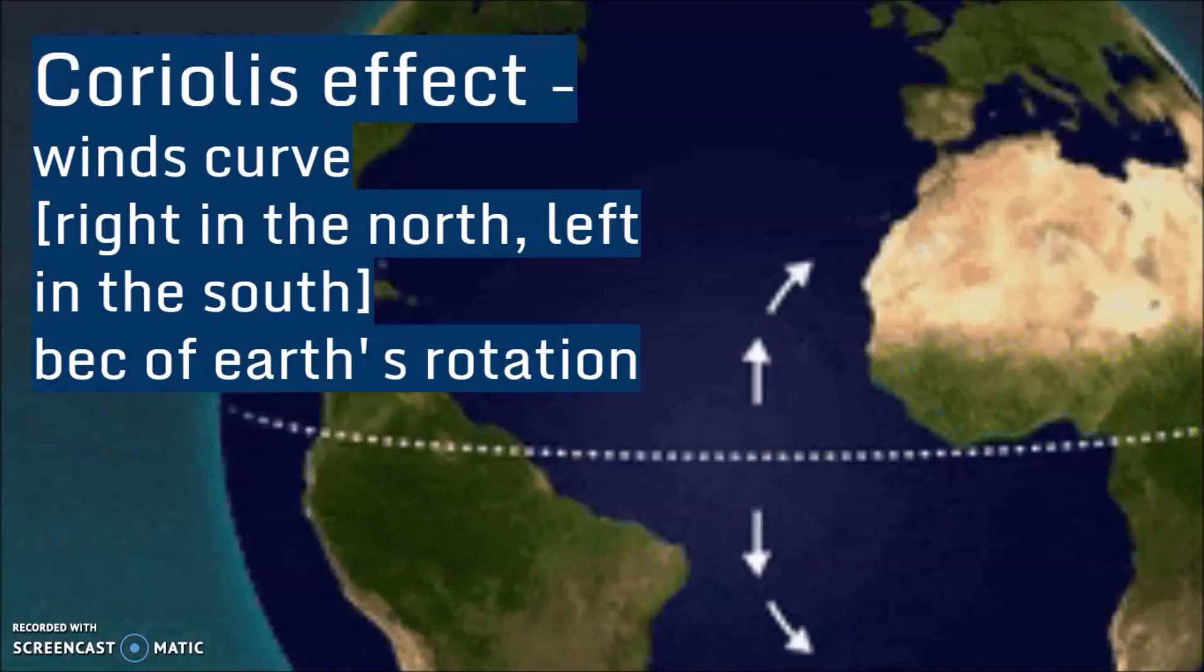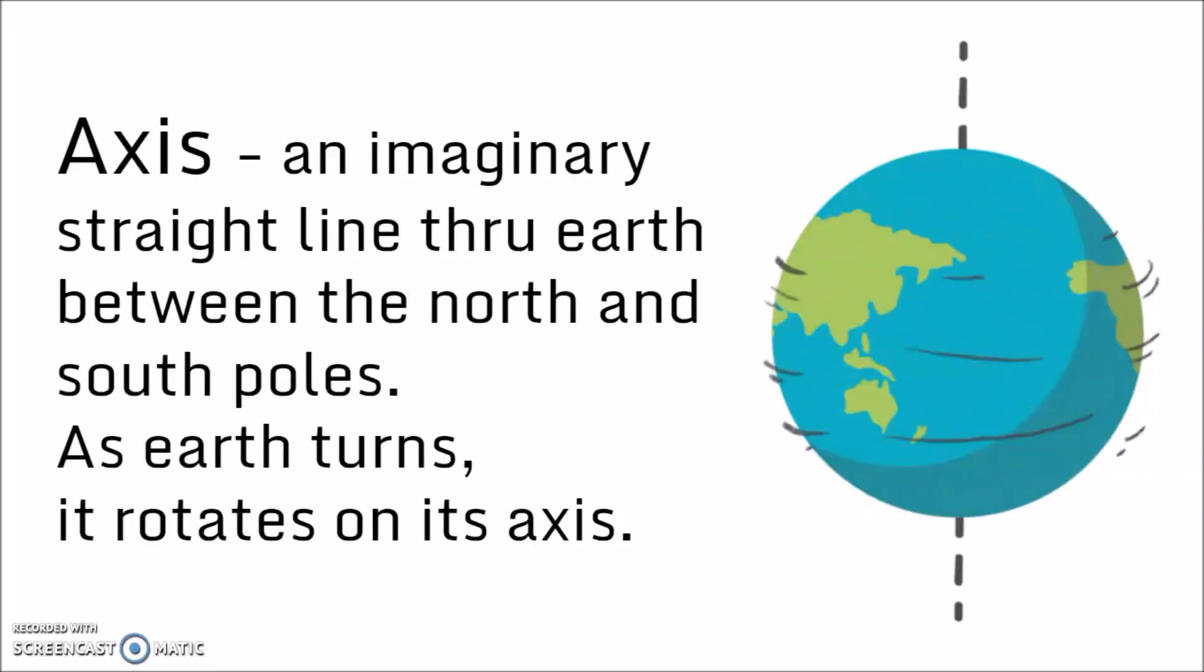Another piece of evidence that we discussed in this class that shows that Earth is rotating is the Coriolis effect, which is that the winds will curve right in the north and left in the south. And this is because of Earth's rotation.